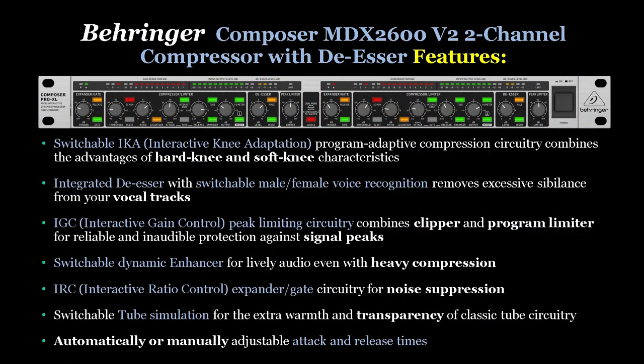The unit has a switchable IKA program adaptive compression circuitry which combines the advantages of hard knee and soft knee characteristics. With hard knee compression, gain reduction occurs as soon as the signal exceeds the threshold. With soft knee compression, the onset of gain reduction occurs gradually after the signal exceeds the threshold, which can produce a more musical sound.